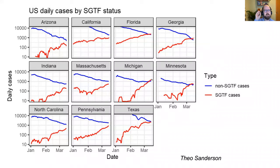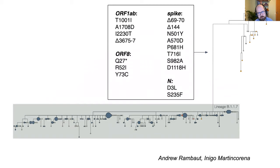S gene target failure was used to track the spread of B.1.1.7 in the UK and also around the world. The United States, surprisingly given its technological base, had very little sequencing in proportion of cases last year — it's increased a lot now that the importance is clear. Using this S gene target failure data, you can see a similar pattern in US hotspots: the red line inferred as B.1.1.7 is growing in states like Michigan and Florida, presenting a finely balanced race between vaccination and the growth of this variant.